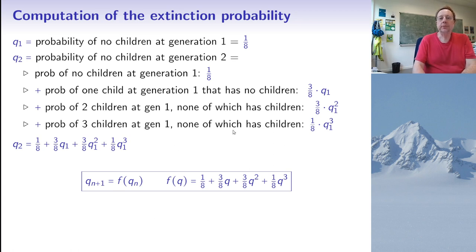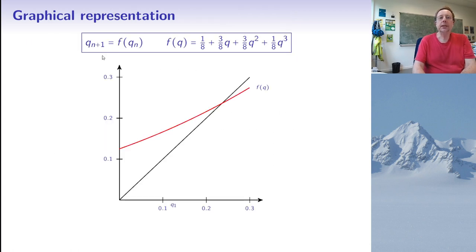And a nice way of solving this iteration problem is the following graphical way. So here I have written my induction relation again, Qn plus 1 equals F of Qn. And here I have plotted Q on the x-axis, F of Q on the y-axis, so that is the red curve here. And the black line here is the diagonal, so where Qn plus 1 is equal to Qn. And we've already seen that we start with Q1, which is 1 over 8, so 0.125, which is somewhere here.